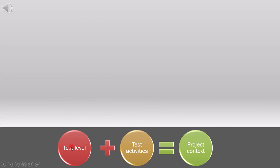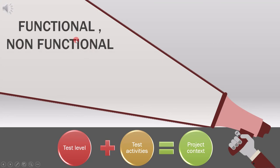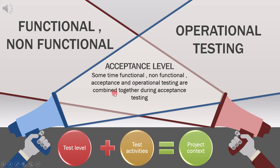In the second example, we again combine test level and test activities to achieve project context. Suppose you have a functional or non-functional testing level and an operational testing activity, and we combine the two for a project context. Here, we want to do acceptance level testing. Sometimes functional or non-functional acceptance and operational testing are combined together during acceptance testing. So to achieve acceptance level testing, we combine the test level and test activities.